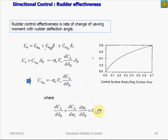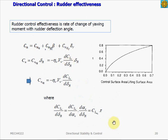We can size the rudder to get the desired amount of directional control. We look at the yawing moment coefficient equation derived before and add the term rudder effectiveness, Cn-delta-r. The contribution to the yawing moment coefficient by rudder deflection is a function of the tail efficiency eta, the vertical tail volume ratio V, the lift curve slope of the vertical tail, and the flap effectiveness tau. The size of the vertical tail affects the volume ratio, and the size of the rudder on the vertical tail affects tau.